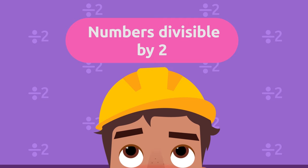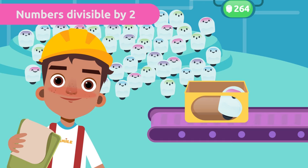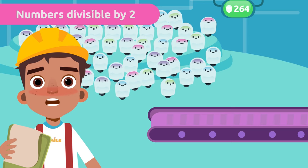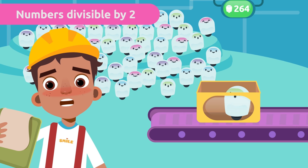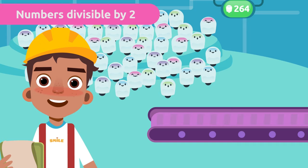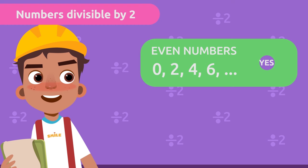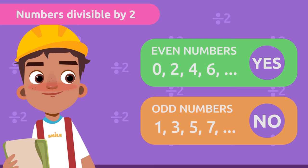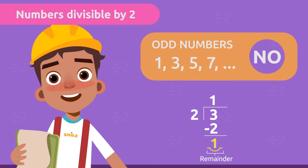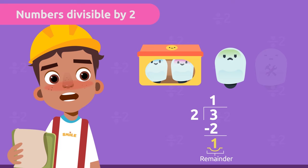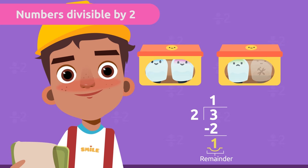Numbers divisible by two. There are 264 robots and I want to put two robots in each box. We need to know if all the boxes will be full or if there will be robots left over. It's very easy to figure out — we can use the divisibility rule of two. If it's an even number, it's divisible by two, and if it's an odd number, it isn't divisible by two. The remainder is one, which is the number of robots left over, meaning we would have to make one more to fill the box.